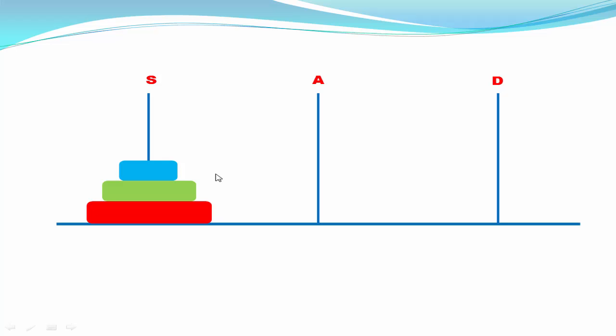Here three pegs are labeled S, A, and D. S indicates source peg, A indicates auxiliary peg, and D indicates destination peg. In this example we are considering three disks and they are placed in decreasing order from bottom to top. Our task is to move the disks from S peg to D peg in the same order — red disk at bottom, then green disk, then blue disk. That's the problem.